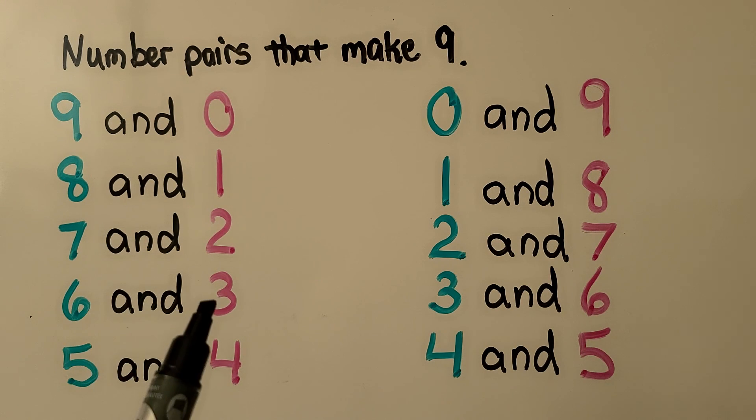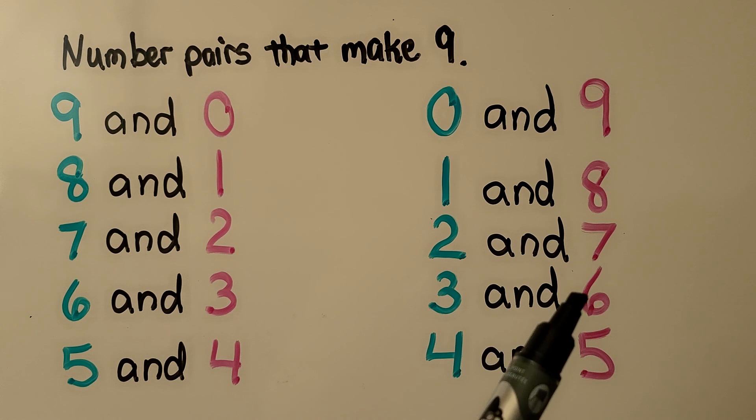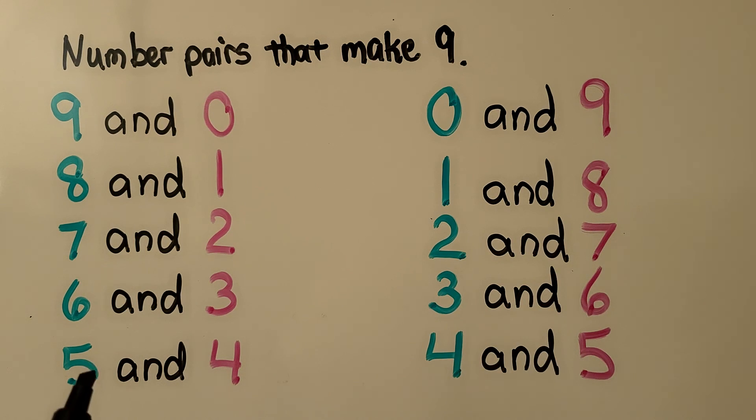We could use 6 and 3, or 3 and 6, and we could use 5 and 4, or 4 and 5. Those number pairs will make 9.